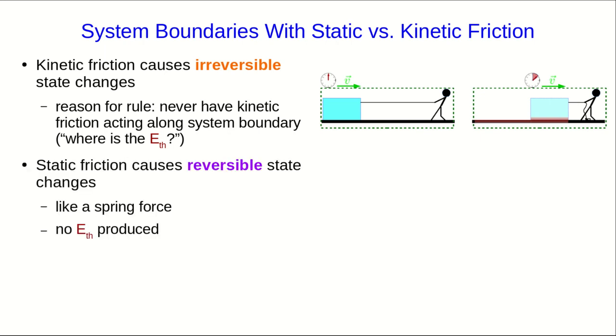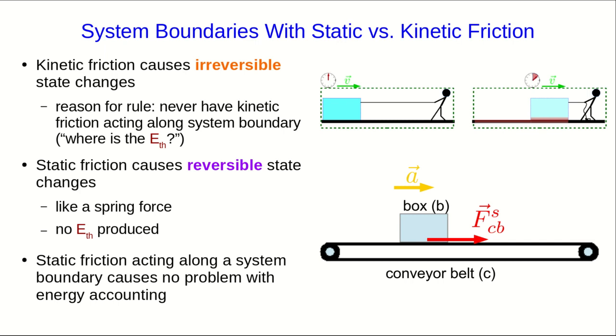But static friction causes reversible state changes. It's really just like a spring force acting on microscopic scales, and so there's no thermal energy produced by static friction. So we don't run into this problem of figuring out where the thermal energy is, and so it causes no problem if we define our system with the static friction acting across the system boundary.